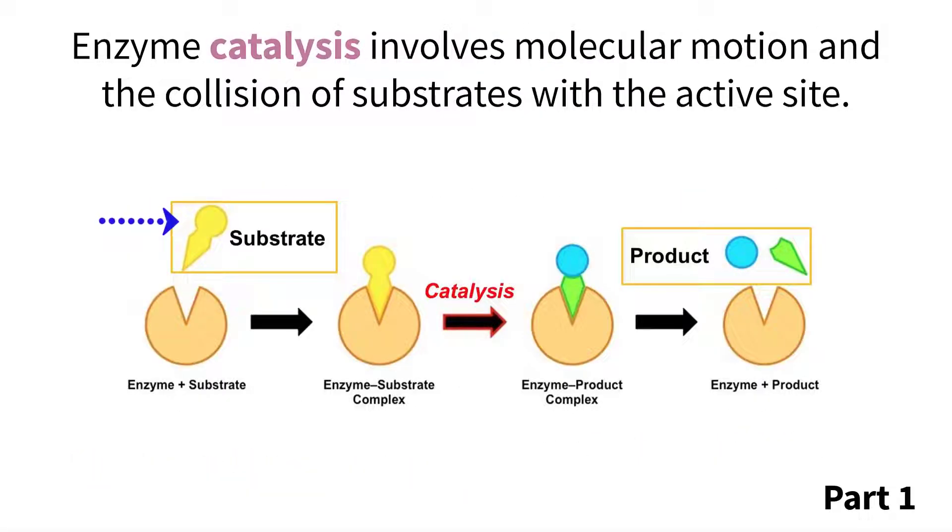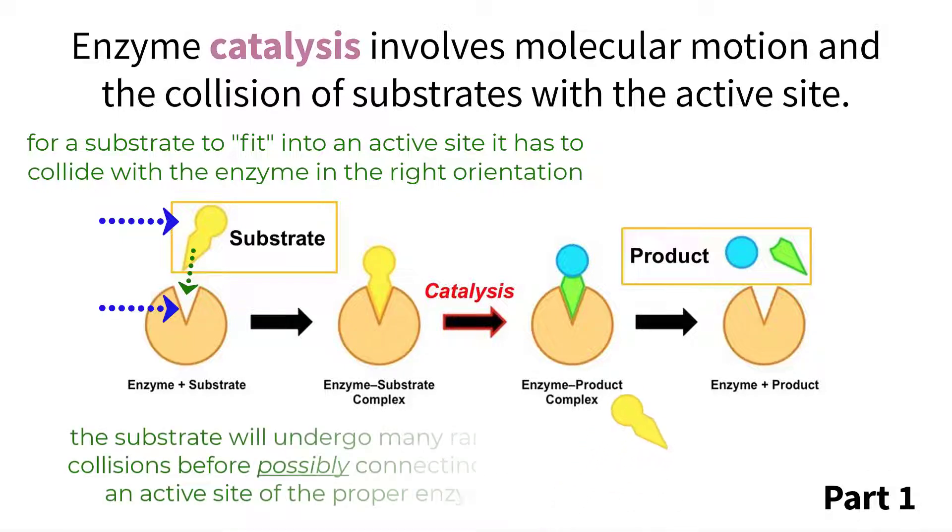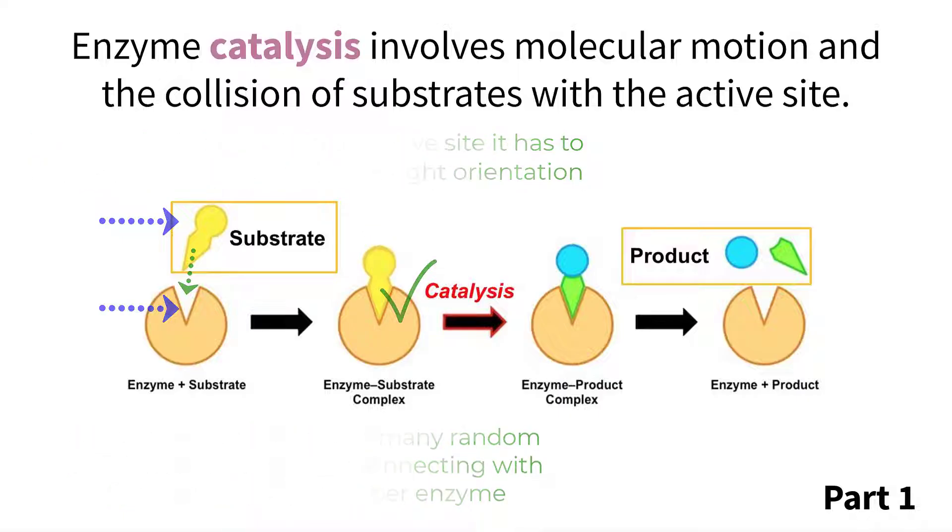For an enzyme to function, the substrate must first attach to the active site, but this process has a degree of randomness to it because the collisions happening between the molecules in your cells are not predetermined. There's no higher-order thinking happening by the molecules telling them to seek out the active site. It simply happens by chance with the enzyme and substrate randomly bumping into each other in the correct orientation to have the key fit into the lock.